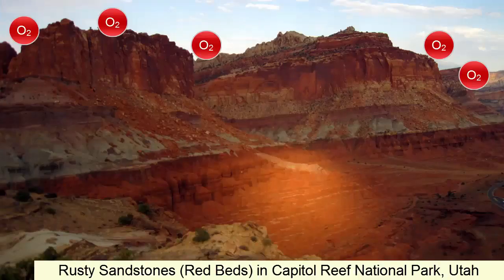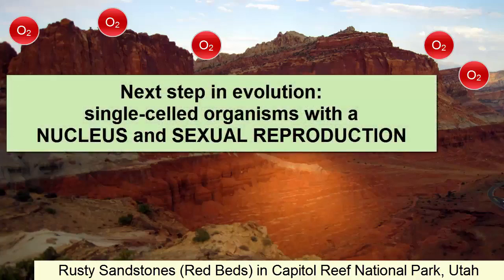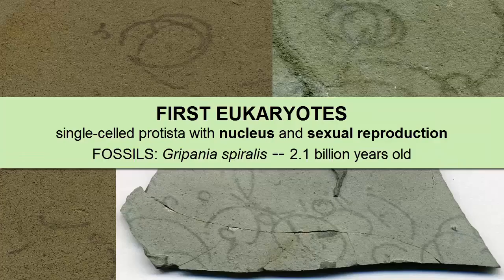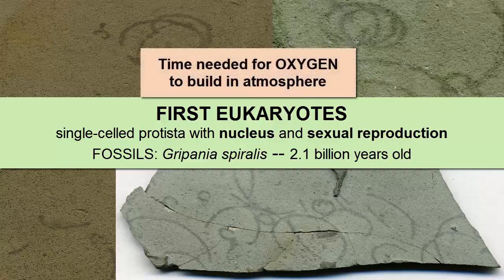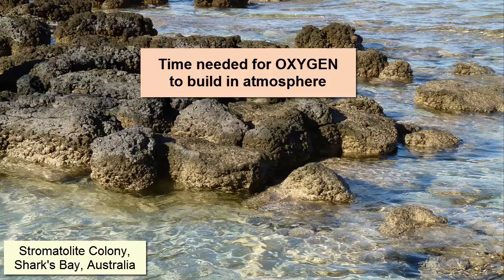The first step towards that advanced life was developing a nucleus and sexual reproduction. The oldest evidence we have of this evolution are fossils of Grypanius spiralis, found in 2.1 billion year old banded iron formations in Michigan. However, it was quite a long time before organisms like these really proliferated and cooperated to create multi-celled life, because it had to wait until oxygen levels in the atmosphere built up enough to support the increased metabolism that goes along with multi-celled life. The stromatolites and other photosynthesizing bacteria still had a lot of work to do.